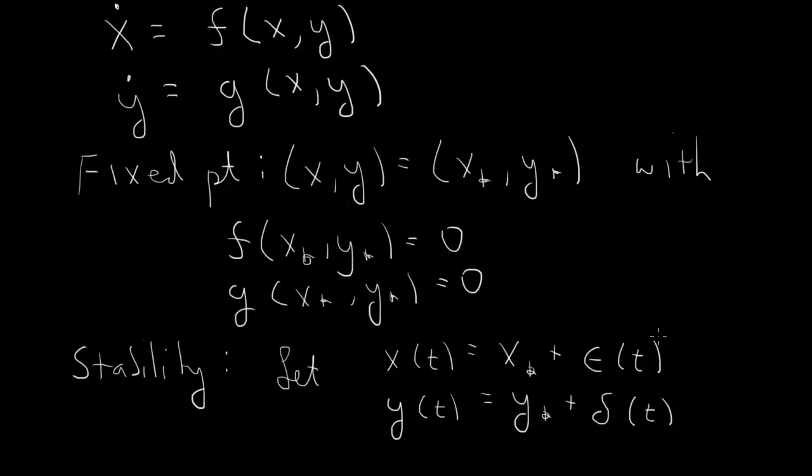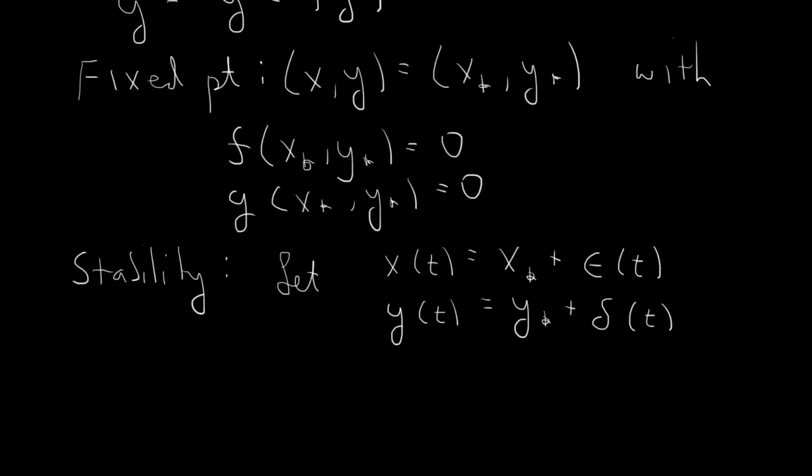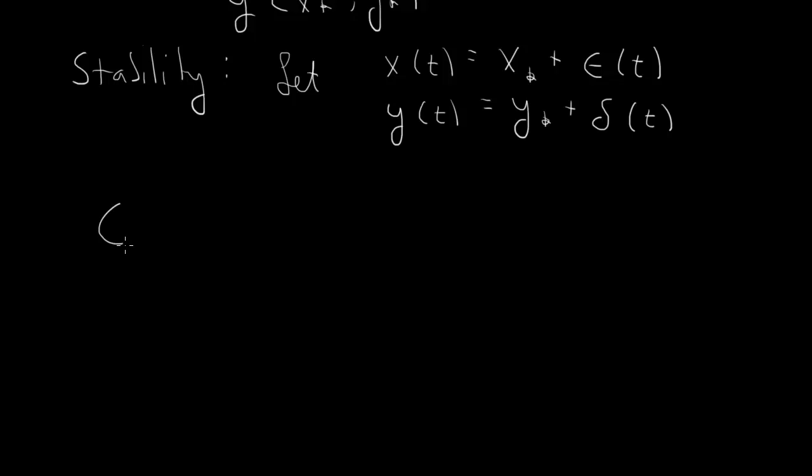So we take these perturbations and substitute into the differential equations. The derivative of the constants x star and y star are 0. So we will get epsilon dot, and then we have f of x which will be f of x star plus epsilon. And we'll get delta dot equals g of, sorry, this is f of x, y. So x star plus epsilon, y star plus delta.